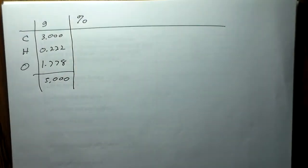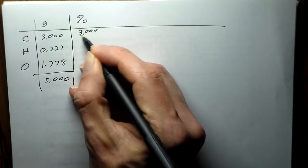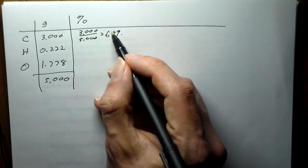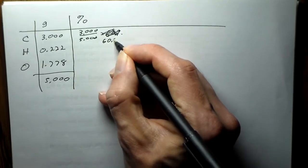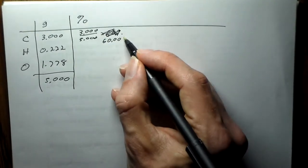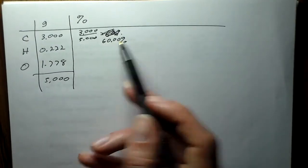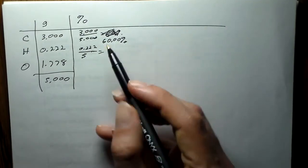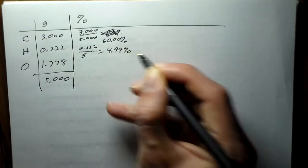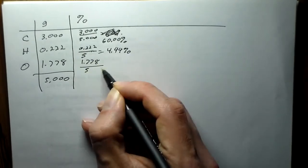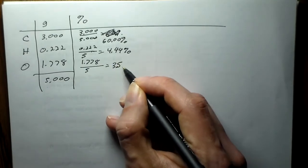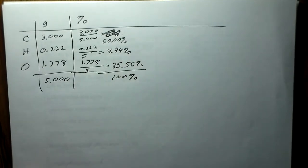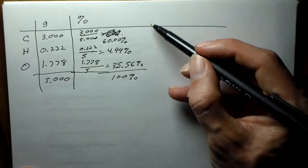Now we calculate the percent composition. Carbon: 3.000 over 5.000 equals 60.00%. Hydrogen: 0.222 over 5 equals 4.44%. Oxygen: 1.778 over 5 equals 35.56%. Adding all these up gives 100%, confirming our math is correct.